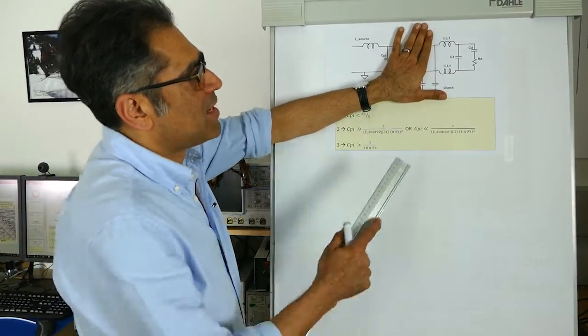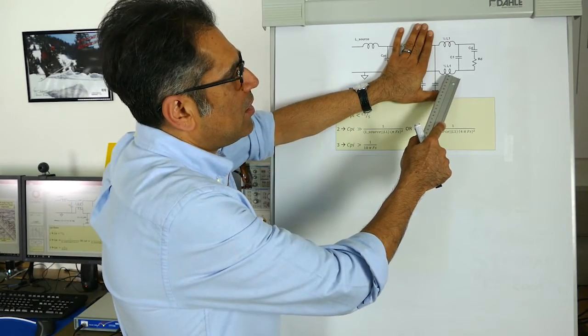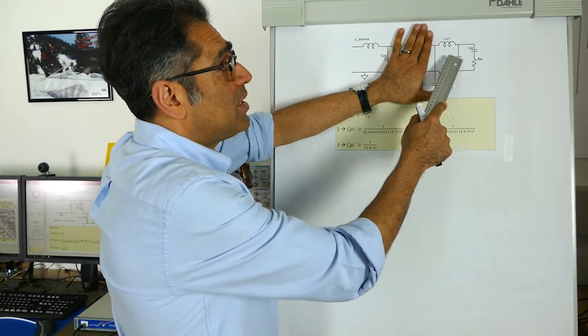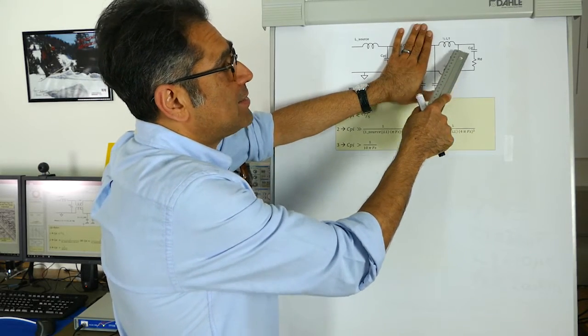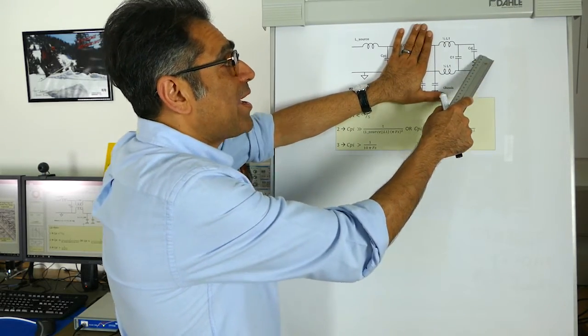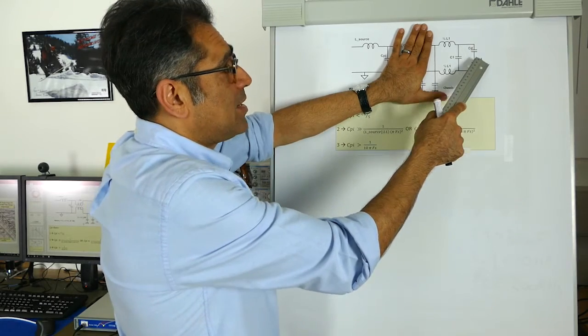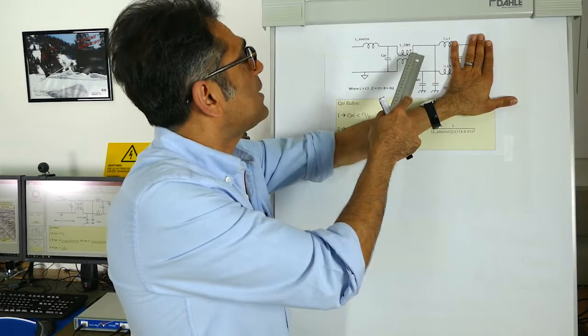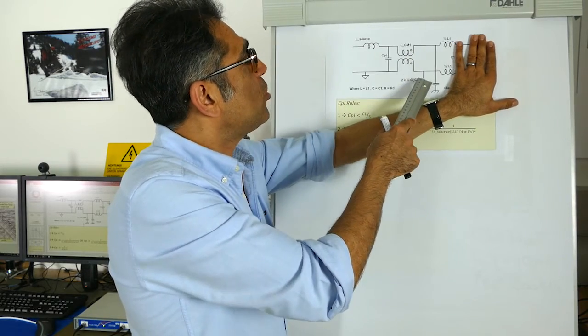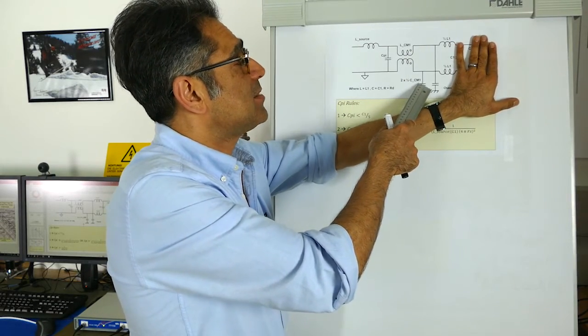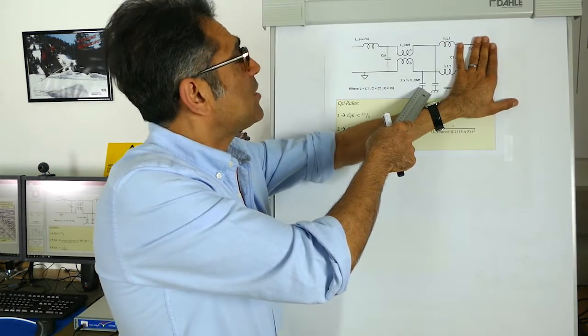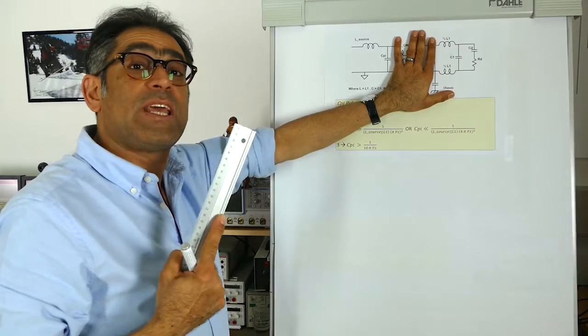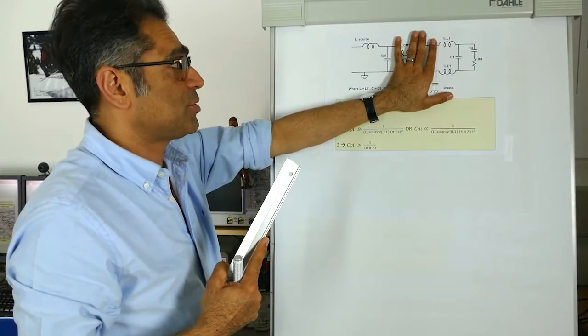We've already discussed how you design and calculate the value of the differential mode components, this is L1 and C1, and the reason why we have the damping capacitor and the damping resistor. We have also discussed how we calculate and size our common mode choke and then the common mode capacitance that goes to chassis. The final thing we're going to talk about is this extra capacitor that we can add in order to get just some little bit more of attenuation.